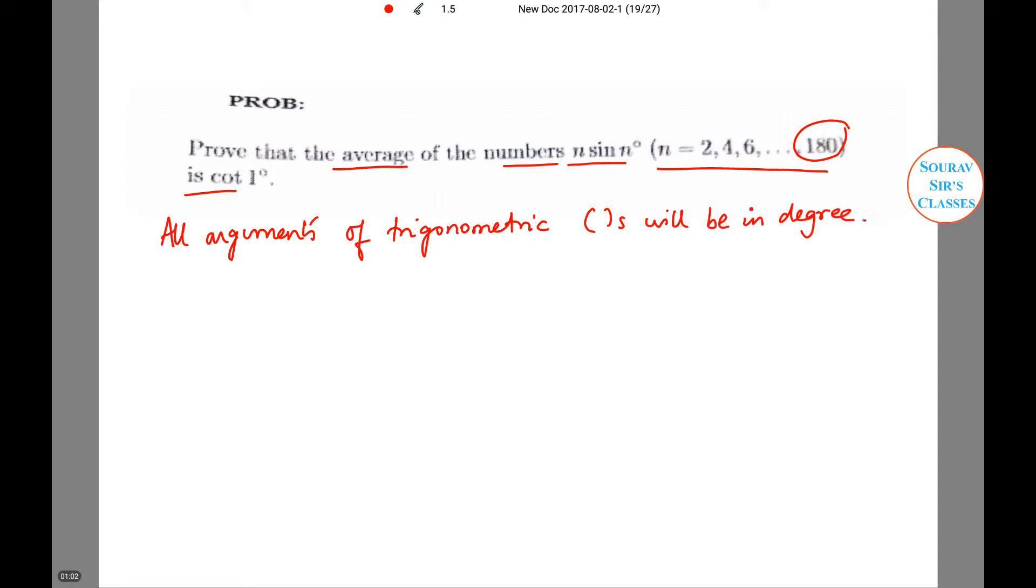We need to prove: 2 sin 2° + 4 sin 4° + ... + 178 sin 178° equals 90 cot 1°.